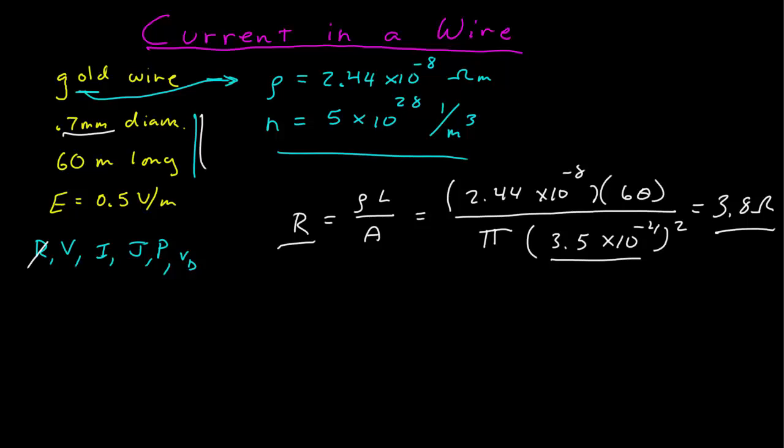All right, since I have a constant electric field, I know the potential difference across the ends is the integral across that entire distance, but since we're saying it's a wire in a straight line and the electric field is constant, the change in potential is just that electric field multiplied by the length. And so, the length is 60 meters, the field is one half, so the voltage difference from the ends is in fact 30 volts. Now, V is done.